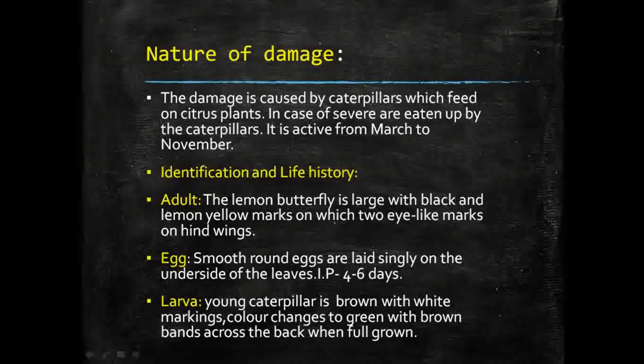The adult butterfly is large with black wings and lemon-yellow marks on the wings. There are also two eye-like marks present on the hind wings. These features help identify the adult butterfly.